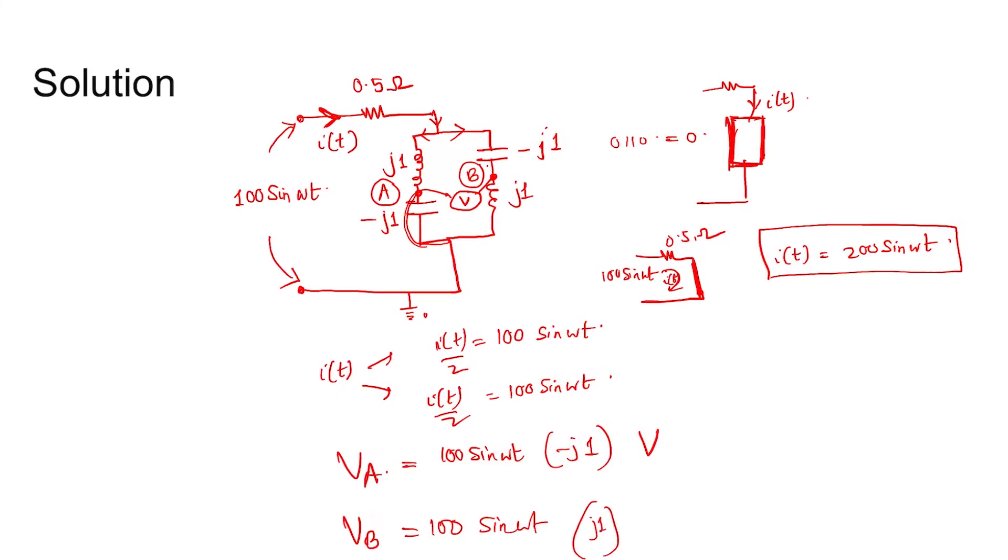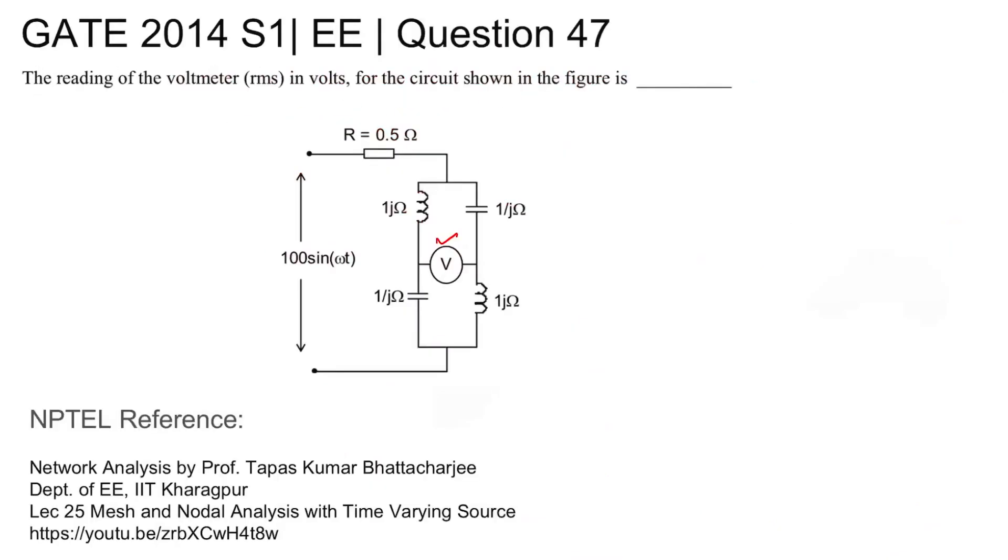And therefore ΔV is the potential difference as well as the voltmeter reading. VA minus VB is given by minus 200j sin(ωt). V_rms equals 200 divided by root 2 equals 141.42 volts. So the voltmeter reading is 141.42 volts. Thank you.